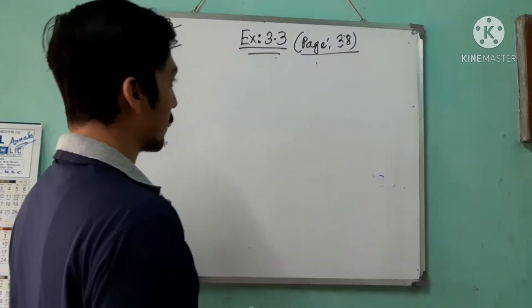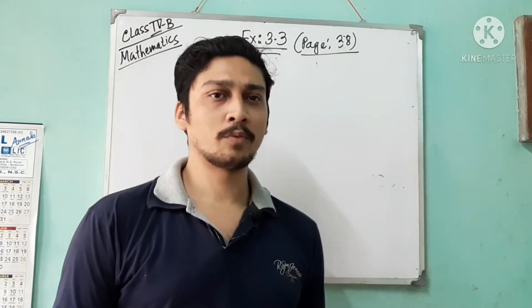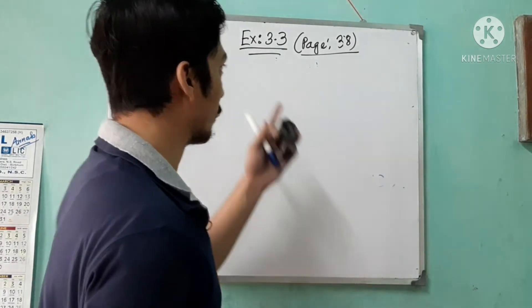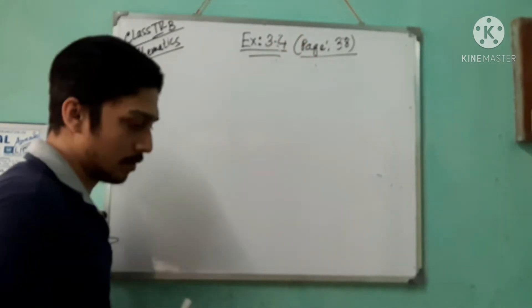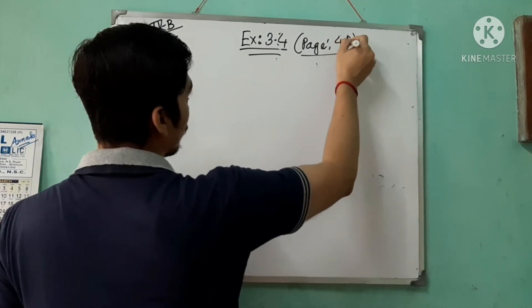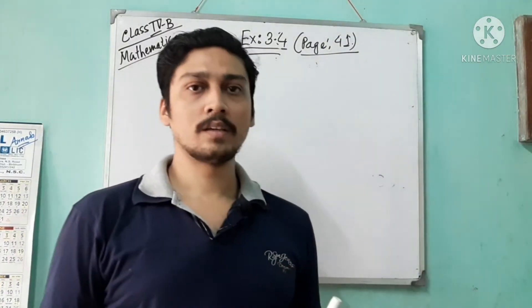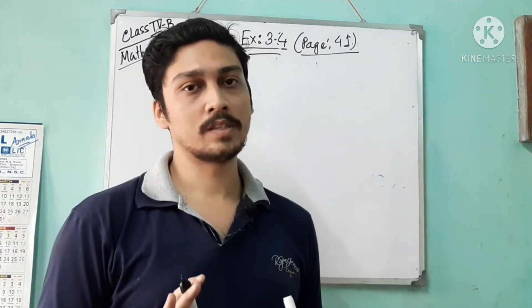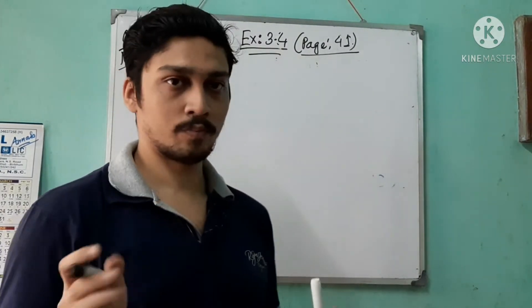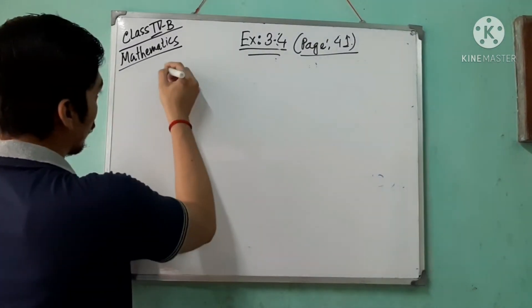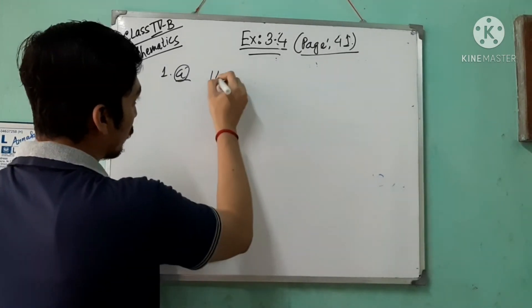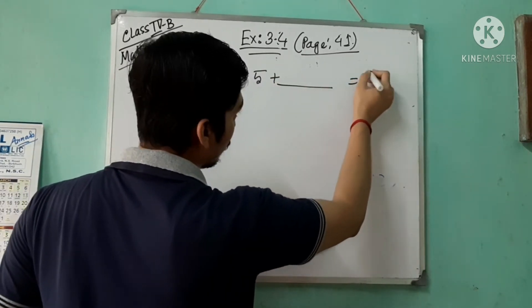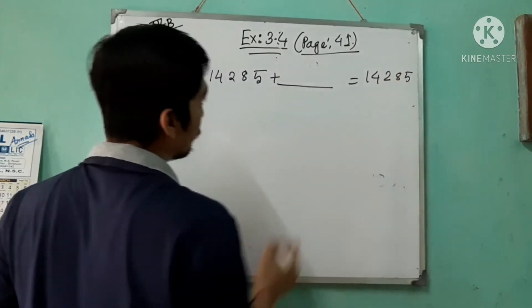Now we will discuss addition of six-digit numbers — the same thing will happen, nothing to worry about. I'm coming to exercise 3.4. Please open page number 41. The same addition properties apply for six-digit and five-digit numbers. Now exercise 3.4, question 1a: it is given 14,285 plus blank equals 14,285.